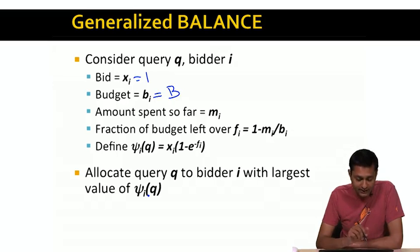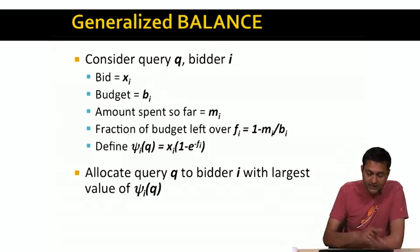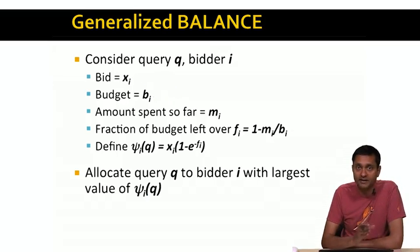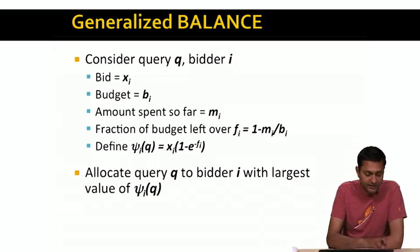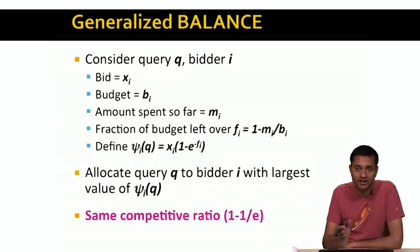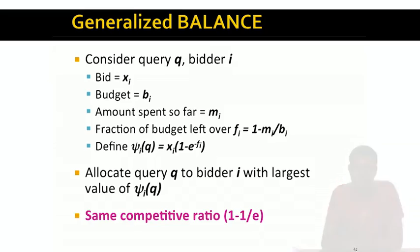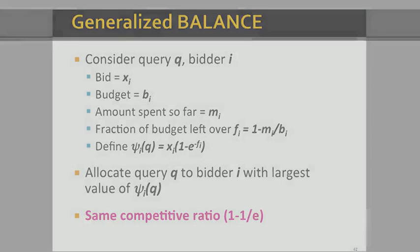The generalized balance algorithm works in the general setting when bids and budgets differ across advertisers. It achieves the same competitive ratio of 1 minus 1/e that the balance algorithm achieves in the simplified setting. So in this lecture we've looked at the balance algorithm and its generalized version, which deal with the AdWords problem with limited budgets and offer a better competitive ratio than the greedy algorithm. Thank you.